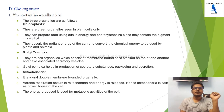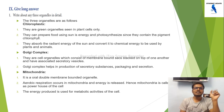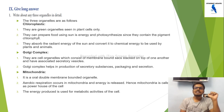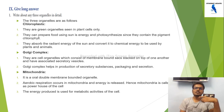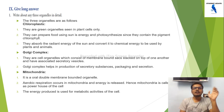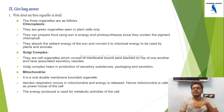Chloroplasts are green organelles seen in plant cells only. They prepare food using sun energy through photosynthesis, since they contain the pigment chlorophyll. Chlorophyll absorbs radiant energy from the sun and converts it into chemical energy to be used in plants and animals.